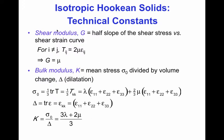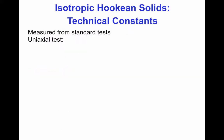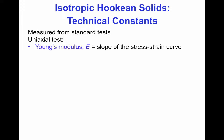So now we have two technical constants: one is easily obtained directly from one of the Lamé constants, and the other is a combination of both. The technical constants measured from the standard uniaxial test are the Young's modulus, which is the slope of the stress-strain curve, and the Poisson ratio nu.